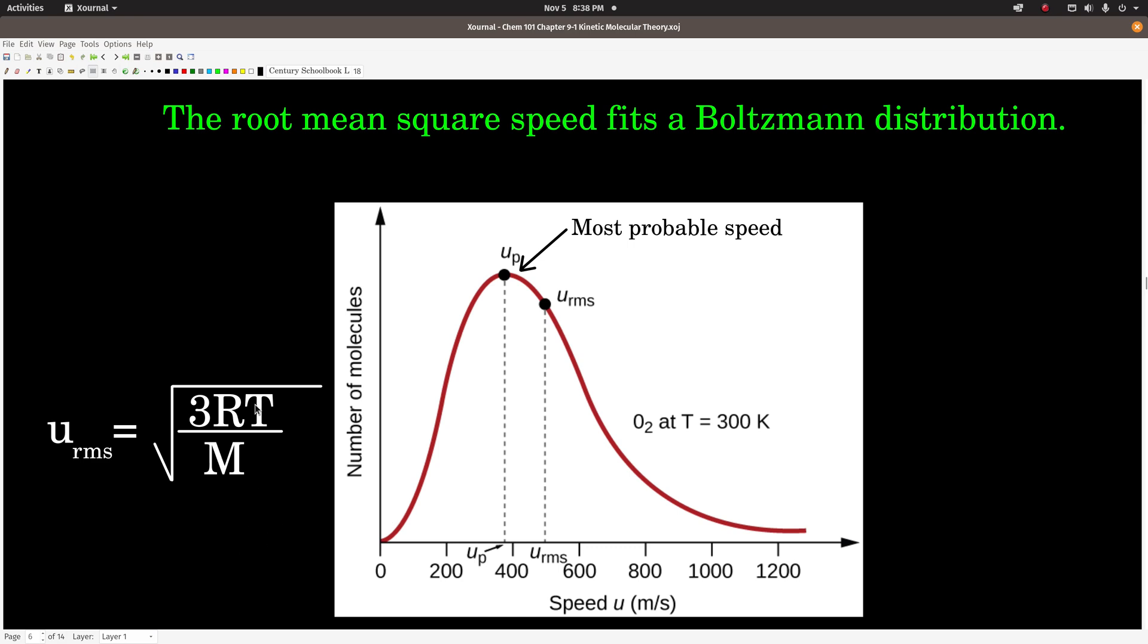Also, comparing two different gases at the same temperature, the heavier gas, the one with the higher molar mass, is going to have a slower root mean square speed. And the one with the lighter molar mass, the lighter gas, will have a higher root mean square speed because the molar mass is in the denominator here.